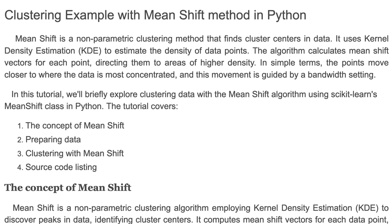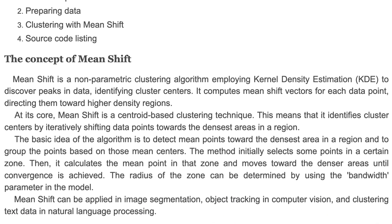Here we cover the concept of MeanShift, preparing data, clustering with MeanShift, and the source code listing. MeanShift is a non-parametric clustering algorithm employing kernel density estimation to discover peaks in data, identifying cluster centers. It computes a MeanShift vector for each data point directing them toward higher density regions. At its core, MeanShift is a centroid-based clustering technique that identifies cluster centers by iteratively shifting data points towards the densest area in a region.